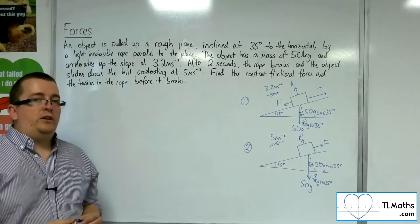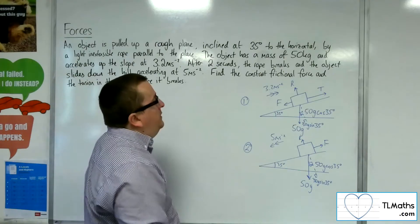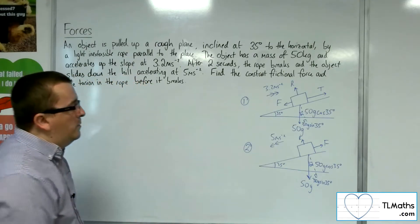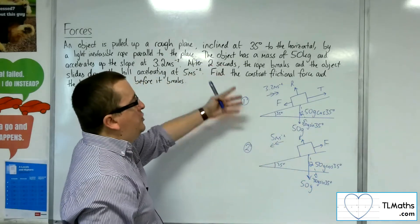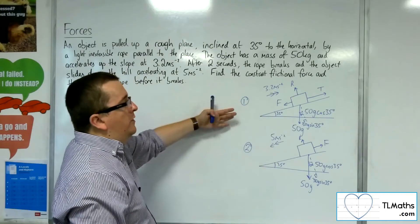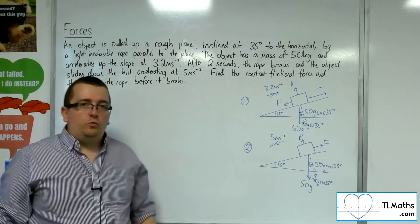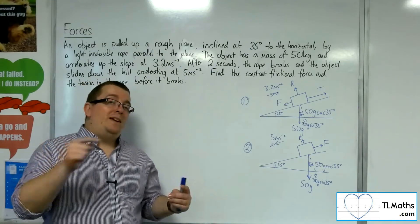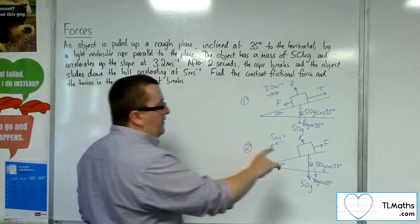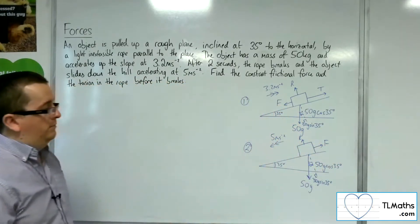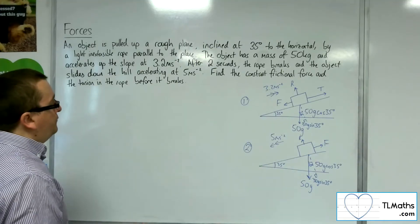In order to find the constant frictional force and the tension of the rope before it breaks, looking at these two diagrams, if I try to find the frictional force and tension from situation one, I've got them both working parallel to the plane, and subsequently I'm going to have an equation with two unknowns in it. So it makes sense to actually find the frictional force from situation two first, because that f there and that f there are going to be the same value, since there's a constant frictional force being applied to the block.